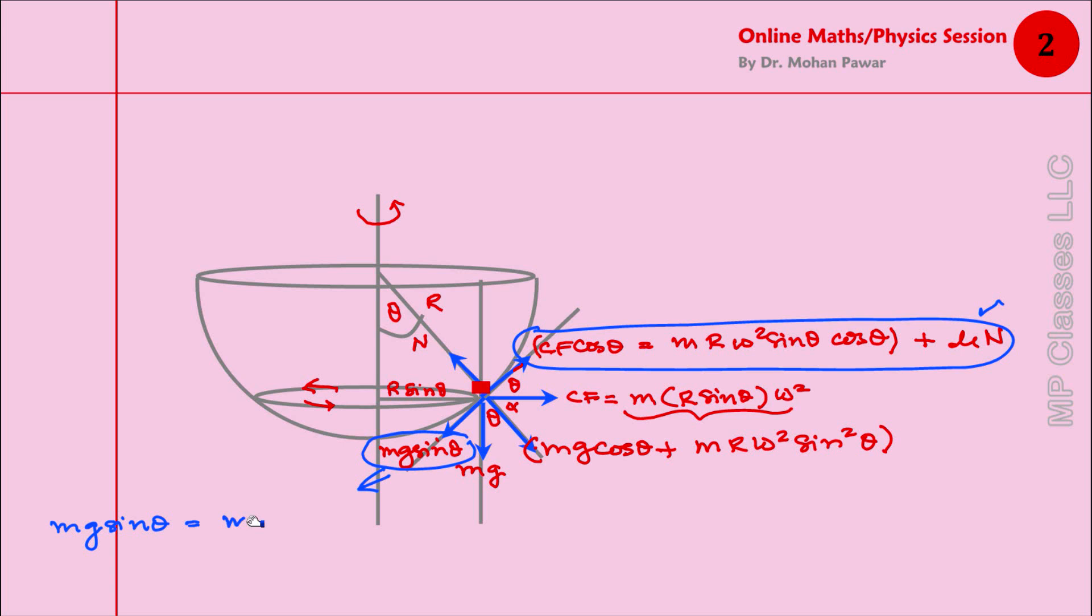mR ω² sin θ cos θ plus μN. The μN—the N is the whole of this—times μ. I am going to multiply each one individually, so I have saved one step: μmg cos θ plus μmR ω² sin θ cos θ plus μmR ω² sin² θ.